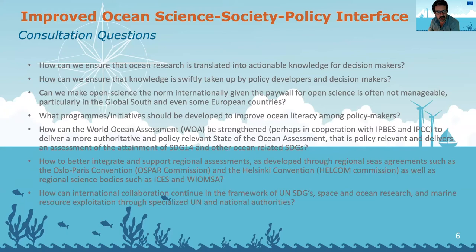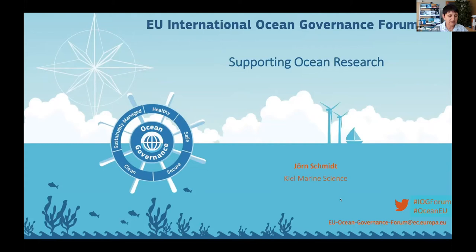Jorn Schmidt is the leader of the research group on marine social-ecological systems at the Centre for Ocean and Society at Kiel University. He holds the UNESCO Chair in Integrated Marine Science and is an adjunct professor at the Marine Affairs Programme of Dalhousie University in Canada. Thank you very much for inviting me to this very stimulating activity. The last two days were already very stimulating with respect to the interaction with the attendees, and I'll go through some of the aspects of the paper on supporting ocean research.